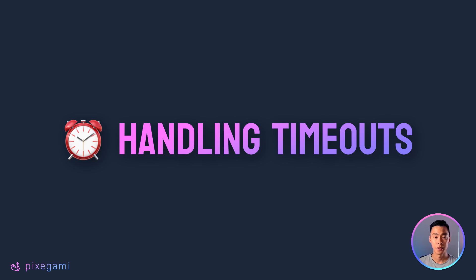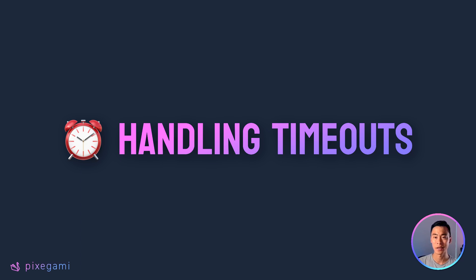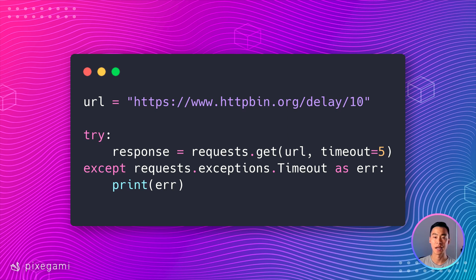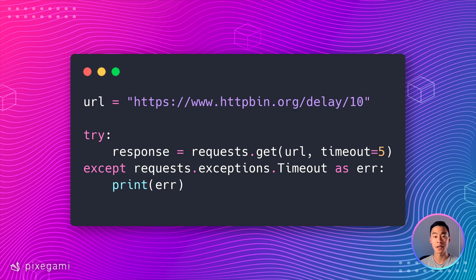Next, let's talk about handling timeouts. If your app has ever stalled after an HTTP request, it's probably because there was a network issue and you haven't set a timeout. A timeout will force a request to fail if it doesn't respond after a number of seconds. By default, the timeout value is set to None, which means it will wait forever — this is usually not good because most HTTP requests shouldn't take longer than a few seconds. To set a timeout, pass the timeout parameter to the request method. In this example, the request to httpbin/delay/10 has a timeout of five seconds — if the response is not received within five seconds, a timeout exception is raised.